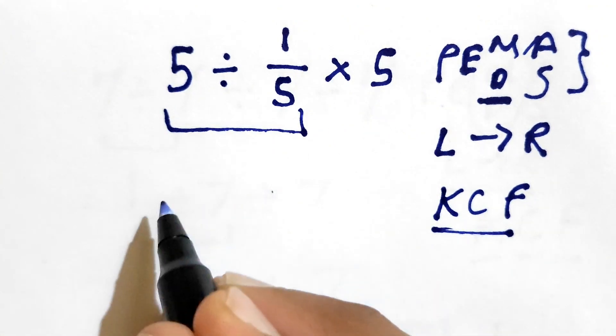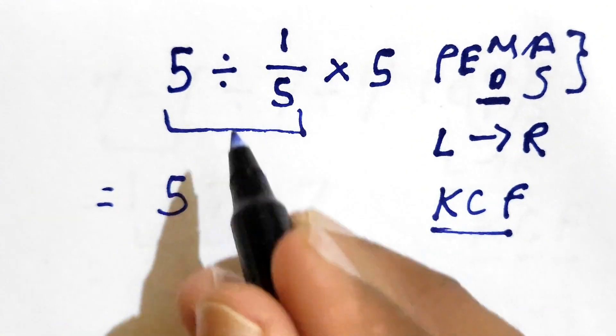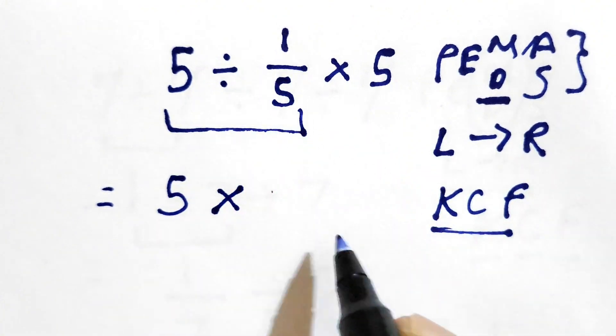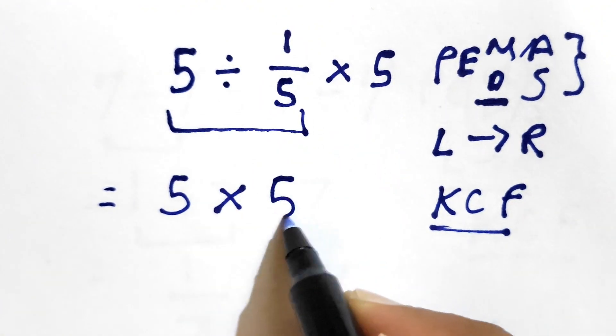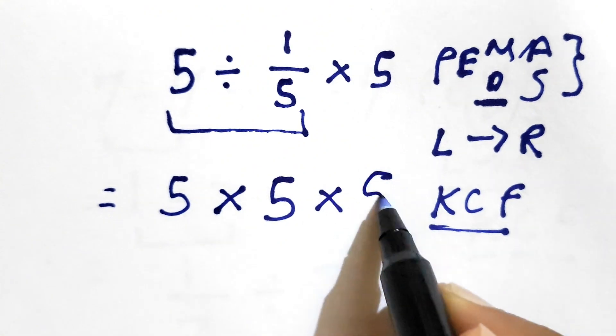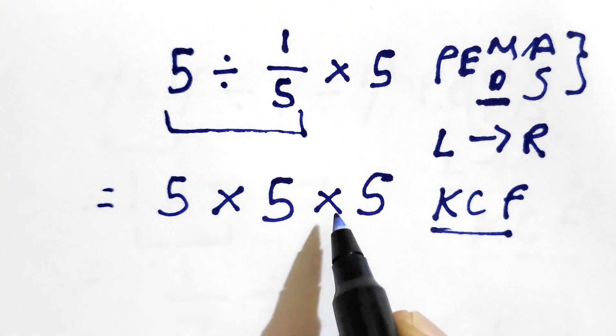We need to keep this 5 as it is. We need to change the division sign into multiplication and flip this 1 over 5, which simply gives us 5. And now we can write this times 5 as it is. So we have 5 times 5 times 5.